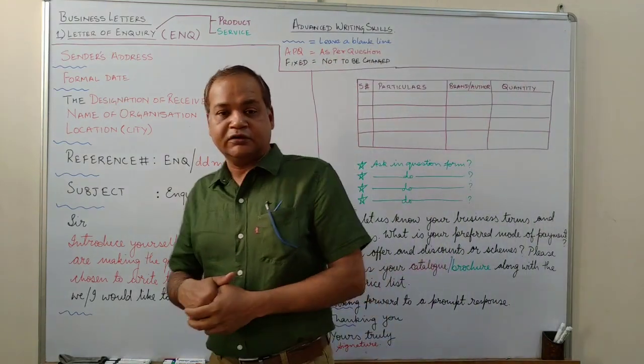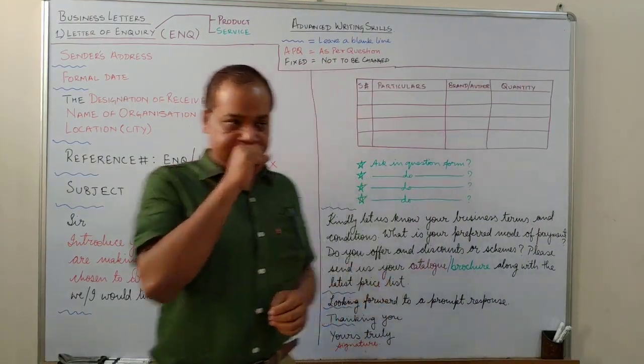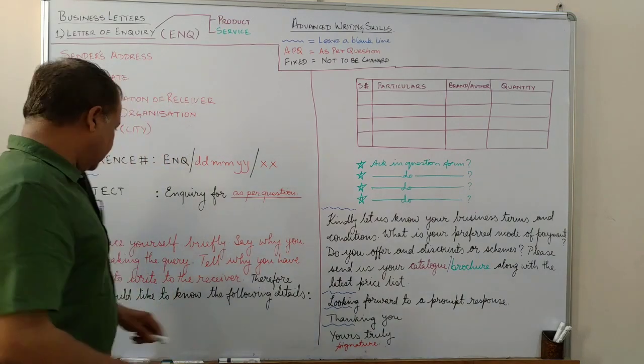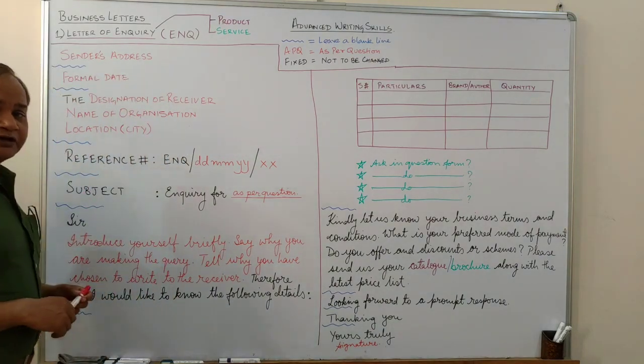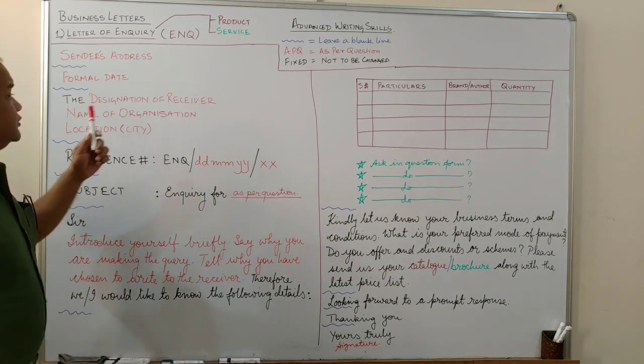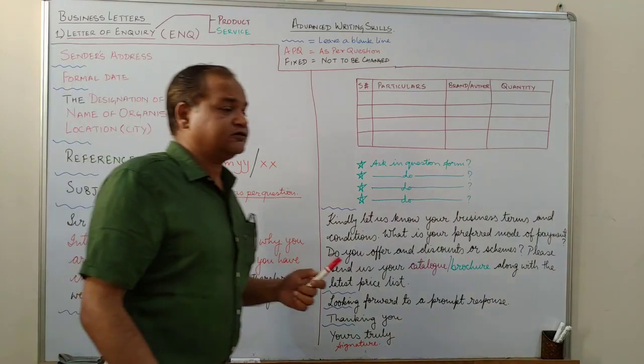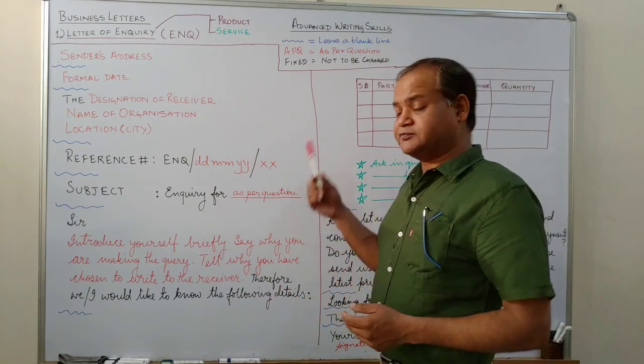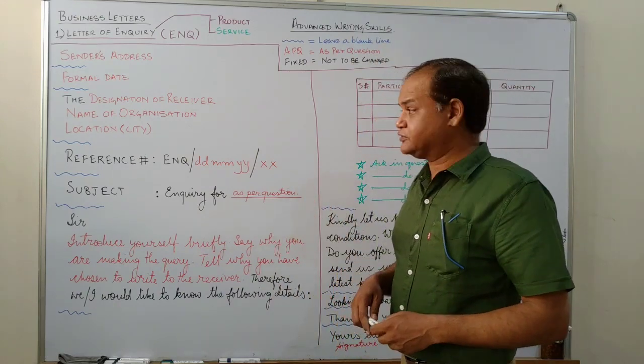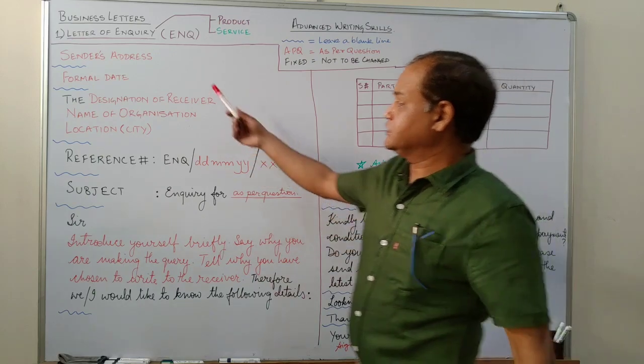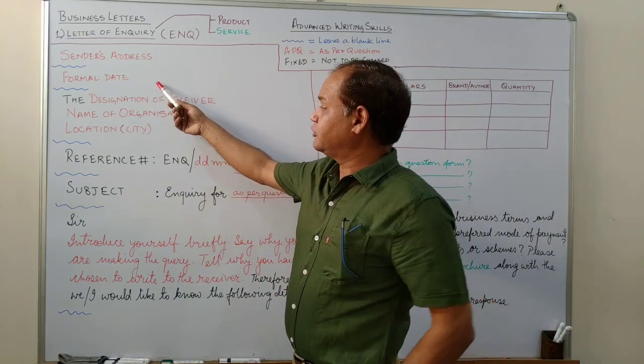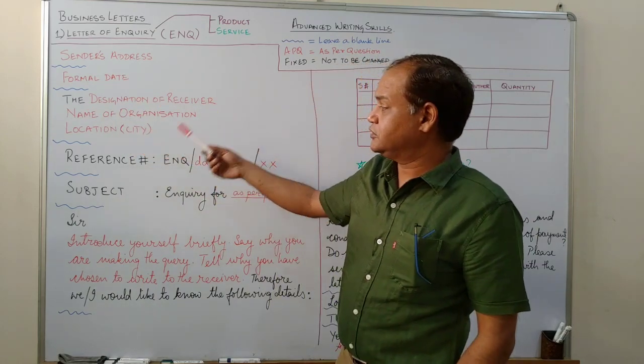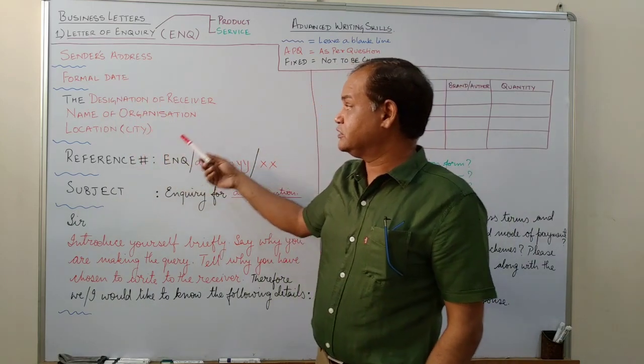Hello Zubur, we meet once again, pardon my soul short. What we have here now is a skeleton of a business letter of enquiry. As per the generic format we've done in the previous video, if you'll see it starts with the sender's address with a formal date, the designation of receiver, name of the organization, location, city.